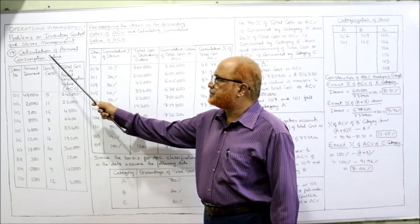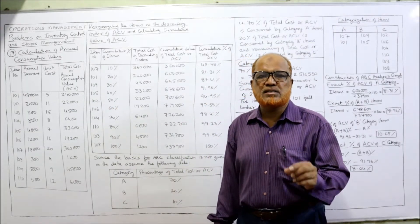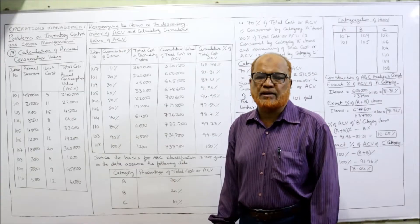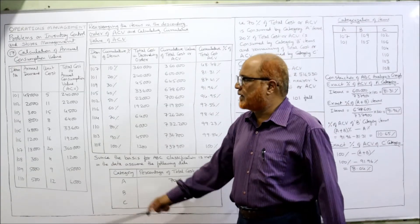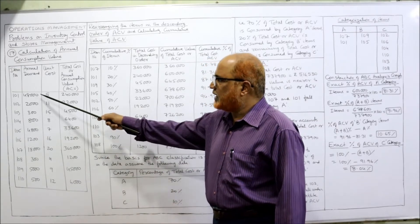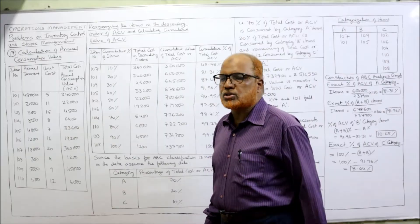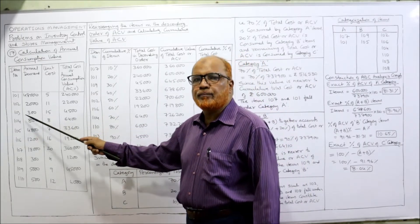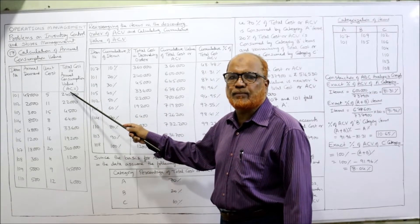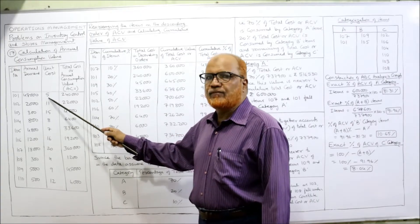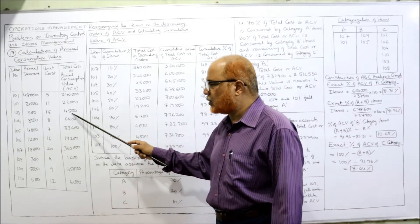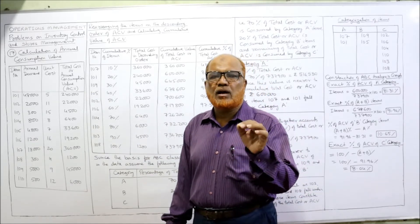Now I'll explain the first table: calculation of Annual Consumption Value (ACV). ACV simply means multiplying unit cost by annual demand. The first column is item number — 101, 102, up to 110. The annual demand is given in units: 48,000, 2,000, etc. The unit cost values are 5, 11, 15, and so on. Multiplying demand by unit cost gives total cost or ACV. For example, 48,000 × 5 = 2,40,000; 2,000 × 11 = 22,000; 300 × 15 = 4,500.